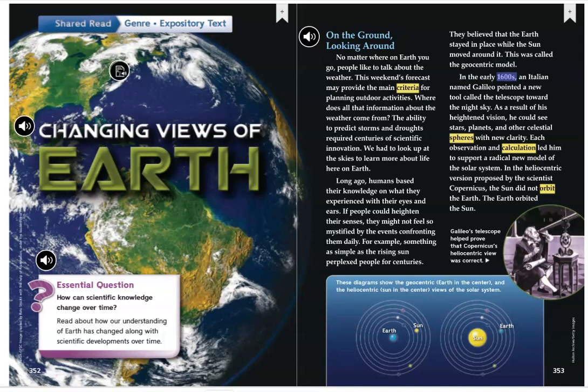In the early 1600s, an Italian named Galileo pointed a new tool called the telescope toward the night sky. As a result of his heightened vision, he could see stars, planets, and other celestial spheres with new clarity. Each observation and calculation led him to support a radical new model of the solar system.